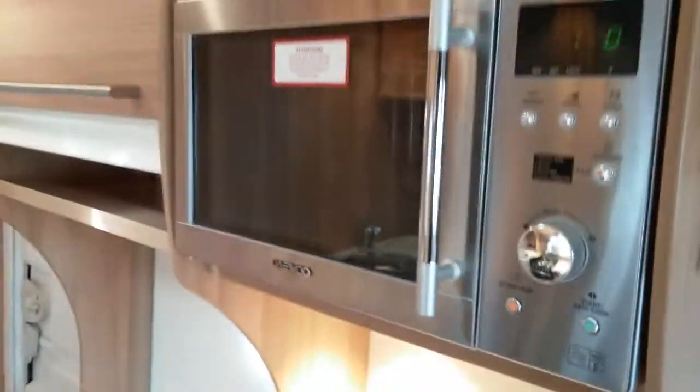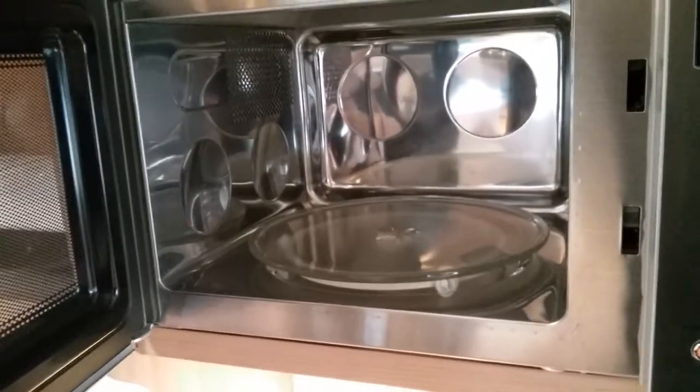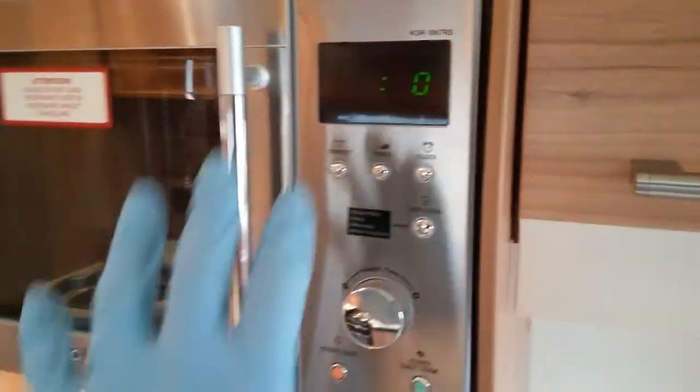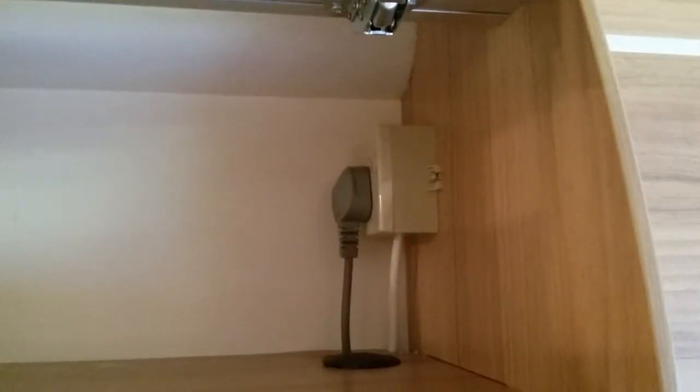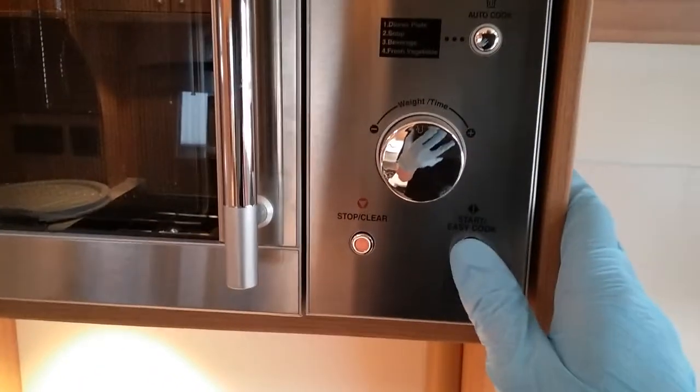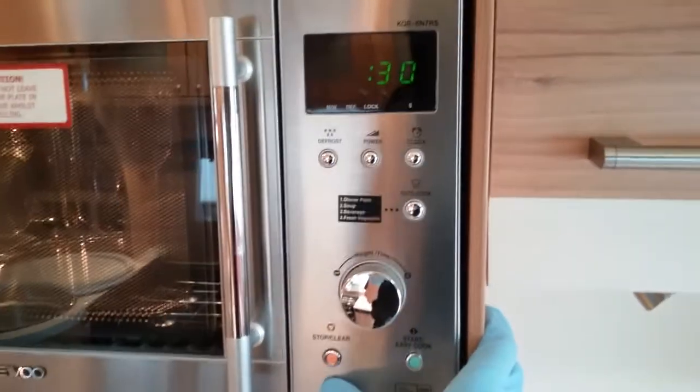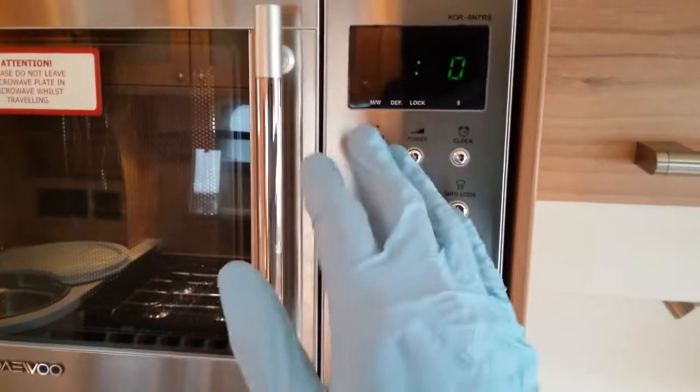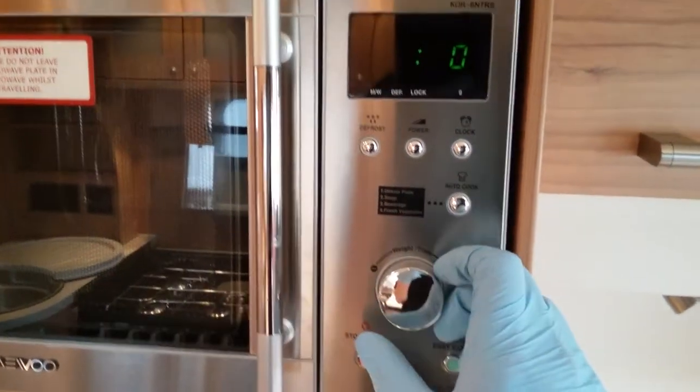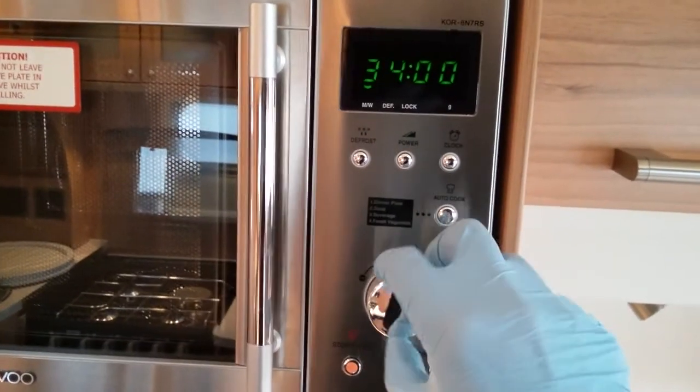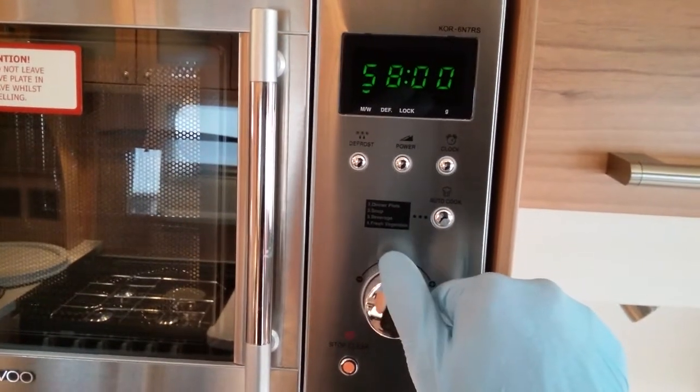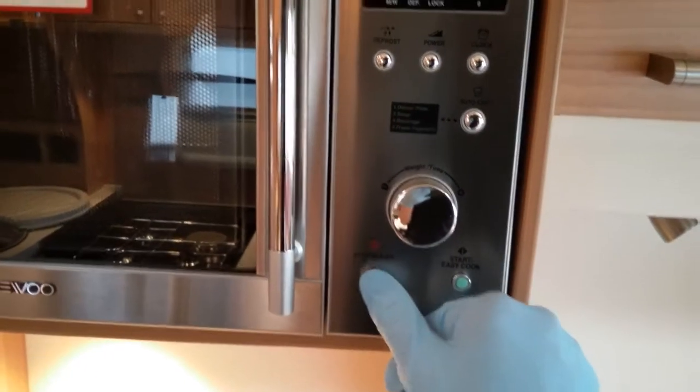Microwave just here. It's always advisable to make sure that all contents are removed for travel. This will work when the caravan is connected to mains electricity, and it's plugged in just up here. We have quick start just here and stop. And then we have power levels, defrost just there. Timer just there. And if you go the other way, obviously as you can see it can go right the way up to virtually an hour.